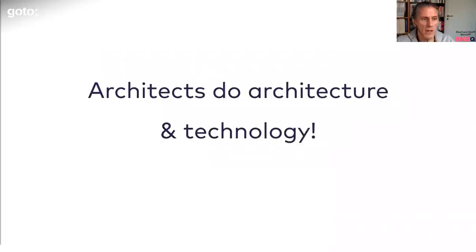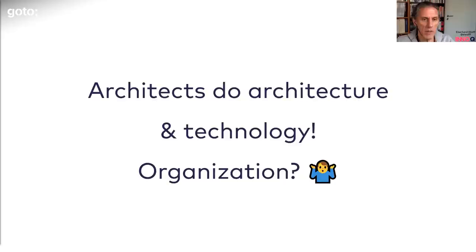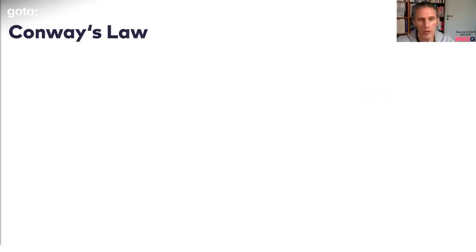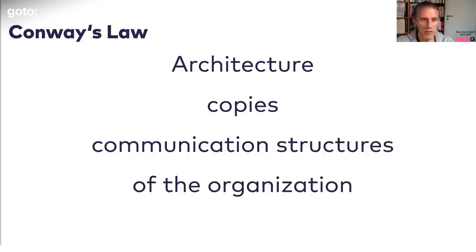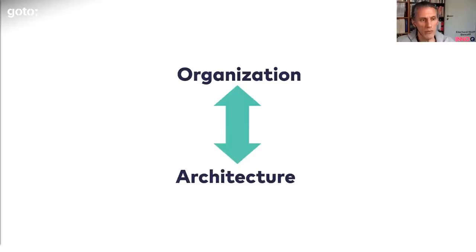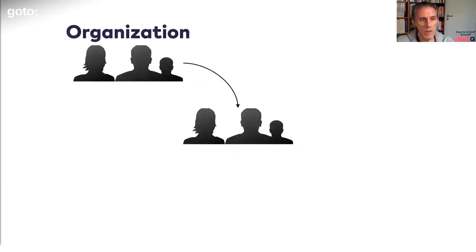I would say that architects actually do architecture and technology, and there is no need to care about organization — but that's a problem. Conway's Law, the famous law already mentioned several times at this conference, says that architecture copies the communication structure of the organization that builds it. So organization and architecture are essentially one: the organization goes first, and the architecture is an artifact generated by the organization.